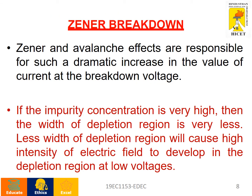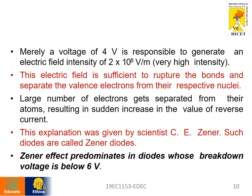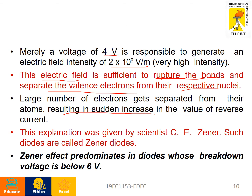Zener and avalanche effects are responsible for the dramatic increase in current at breakdown voltage. The impurity concentration is very high, and the width of the depletion region is very small. For example, if the depletion width is 200 angstroms and the reverse bias voltage is 4 volts, the electric field is calculated as 4 divided by 200 × 10⁻¹⁰, giving 2×10⁷ volts per meter. This strong electric field ruptures the bonds and separates the valence electrons from their respective nuclei, resulting in a sudden increase in reverse current. This was explained by Zener, and therefore the device is named the zener diode.